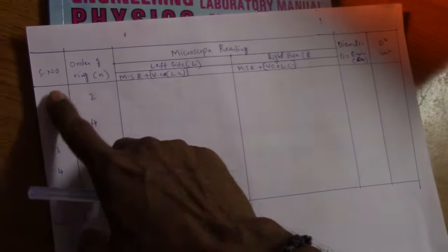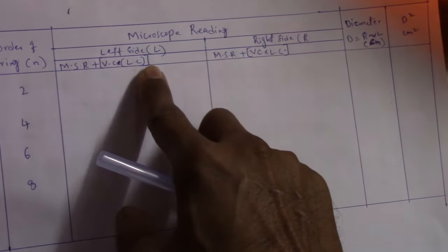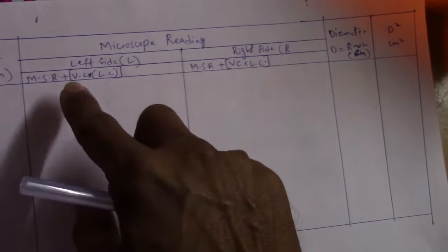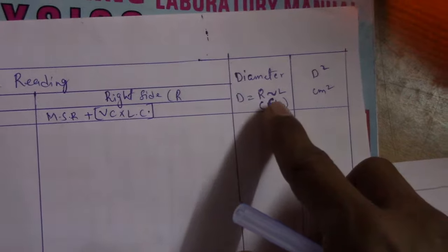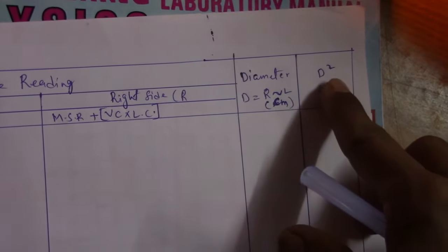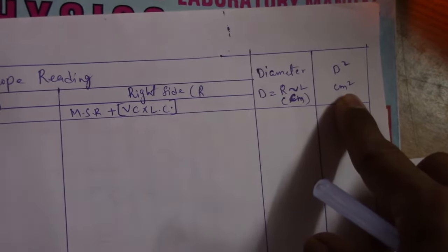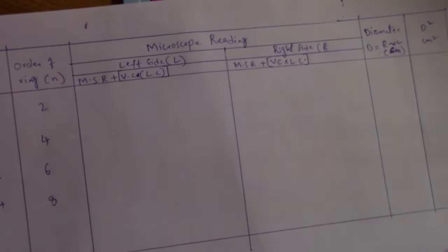To find the R value, we have a tabulation with serial number, order of ring (n), and microscope readings for left and right sides — MSR plus VC into LC, where MSR is main scale reading, VC is vernier coincidence, and LC is least count of the traveling microscope. The diameter D equals the difference of left and right readings in centimeters. We then square the diameter to get D squared in centimeters squared, and substitute the D squared and lambda values to find the radius of curvature.